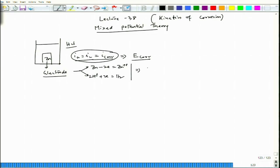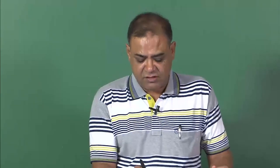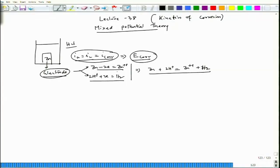This leads to one redox reaction: Zn + 2H⁺ → Zn²⁺ + H₂. The electrode achieves a unique mixed potential which is not the same as the equilibrium potential for the Zn/Zn²⁺ or the hydrogen half-cell reactions. Each of those half-cell reactions has its own reversible potential, and the system shifts from those individual potentials to E_cor due to the combined reactions.